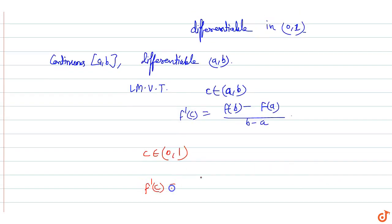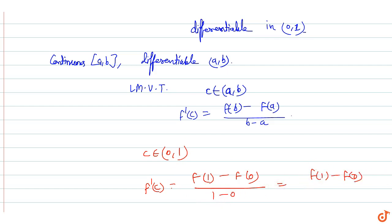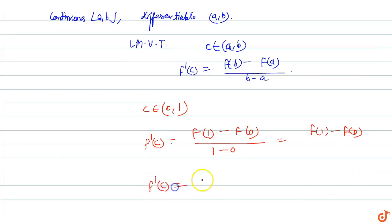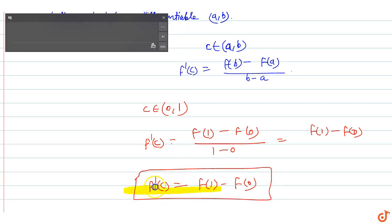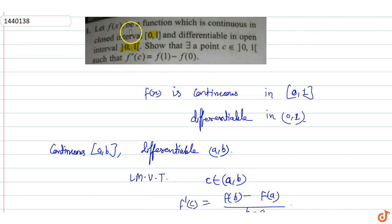...f'(c) equals f(b) minus f(a) upon b minus a, substituting b=1 and a=0, we get f(1) minus f(0) upon 1 minus 0, which gives f(1) minus f(0). So a point c lies in between (0,1) where f'(c) is equal to f(1) minus f(0). If f(x) is continuous on [0,1] and differentiable on (0,1), then a point c exists in (0,1) where f'(c) equals f(1) minus f(0).